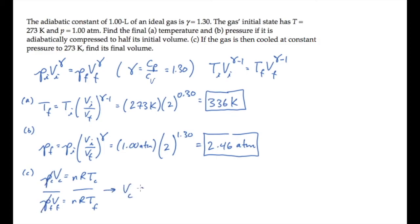It equals the final volume from parts A and B times the ratio of the temperatures. The final volume from parts A and B is half of the initial volume, the 1 liter. So we can substitute numbers and calculate, finding that the cooled volume is 0.406 liters.